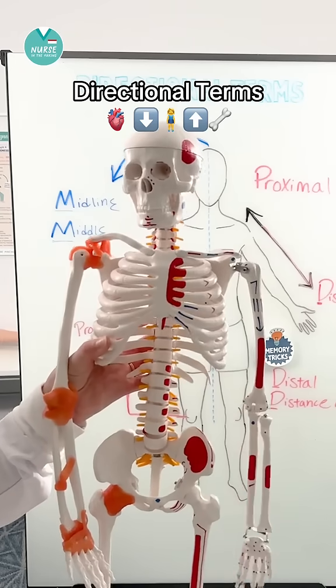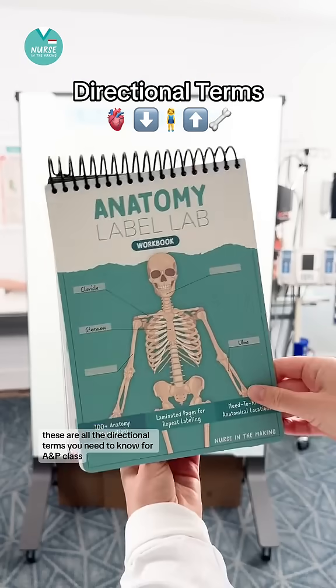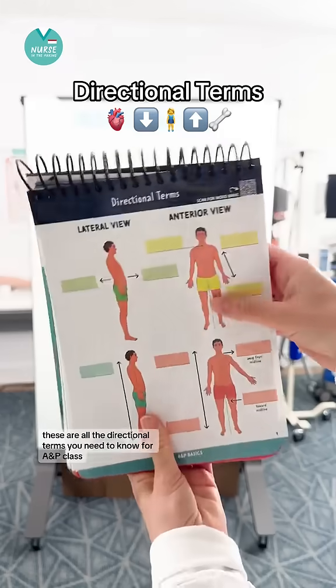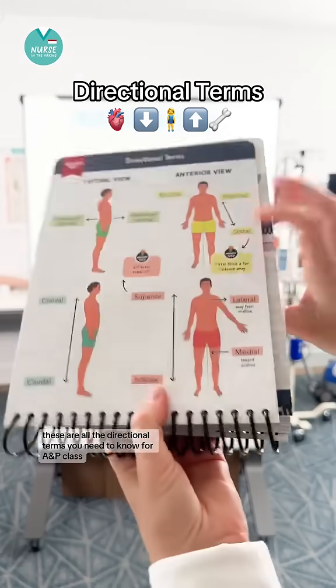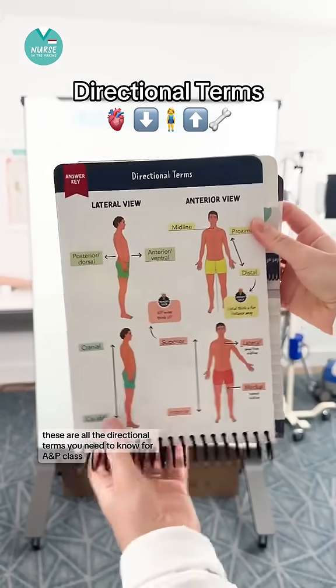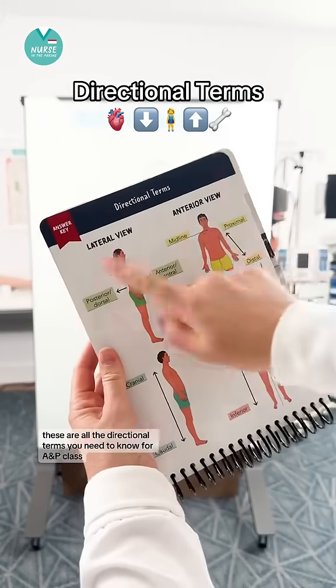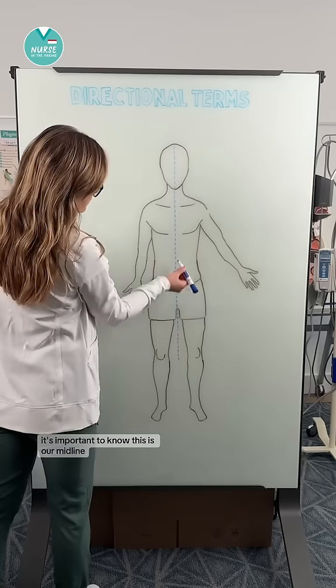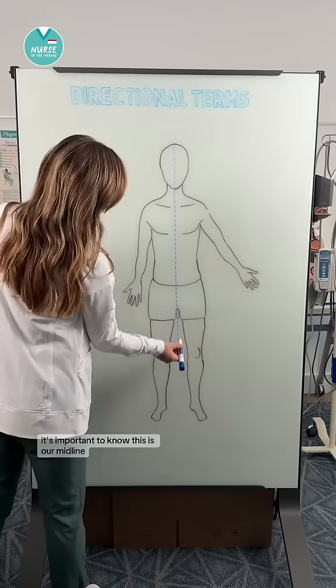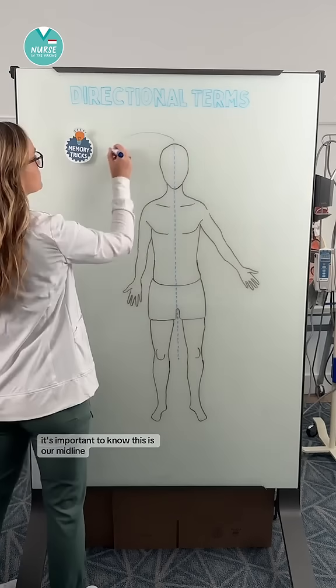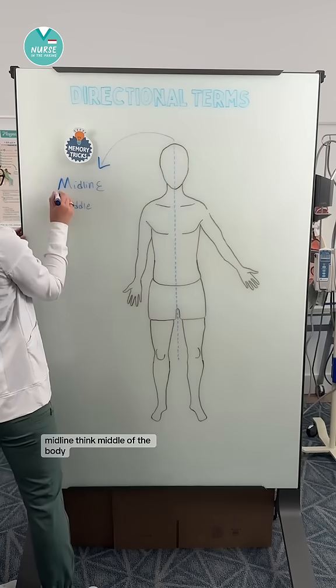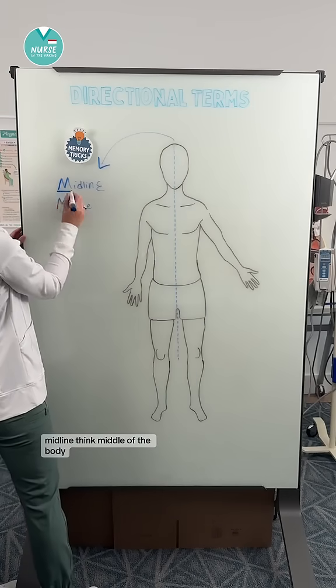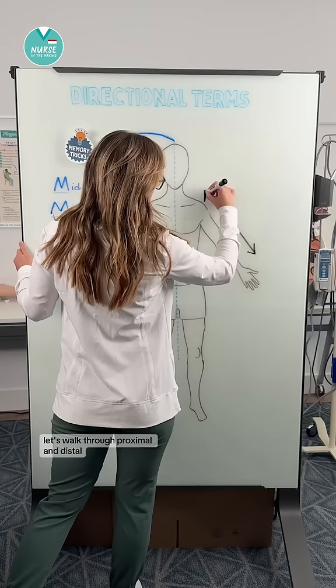Let's talk about directional terms. These are all the directional terms you need to know for A&P class. Let's walk through a few. First, it's important to know this is our midline — think middle of the body.